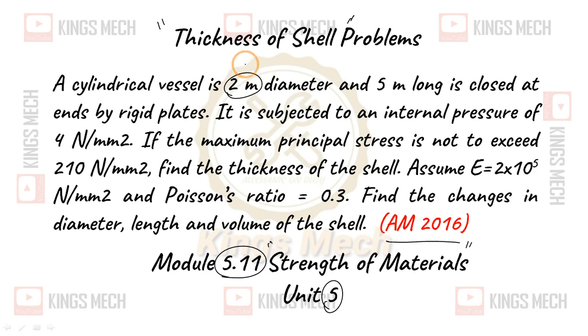A cylindrical vessel, 2 meter diameter (D = 2000 mm), length 5 meter (5000 mm), is closed at the ends by rigid plates. It is subjected to an internal pressure of 4 N/mm². If the maximum principal stress is not to exceed 210 N/mm², find the thickness of the shell. Assume E = 2×10⁵ N/mm², Poisson ratio 0.3. Find the changes in diameter, length and volume of the shell.